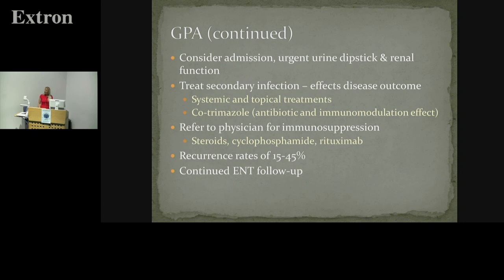They can acutely deteriorate — it used to have 100% mortality before good treatment — so if they're unwell, consider admitting them. We need to treat their secondary infections, and that's where co-trimoxazole (Septrin) becomes quite effective. We need to involve rheumatologists in their immunosuppression. Rituximab, an anti-CD20 monoclonal antibody, depletes B cells and has transformed the care of patients with vasculitis and other B-cell-related diseases. They now do very well with good management of what can be a very aggressive disease.